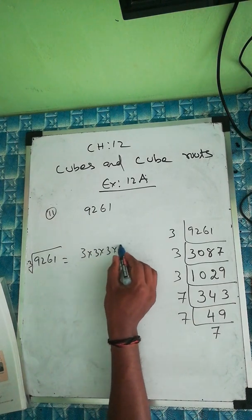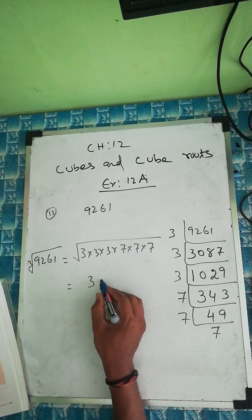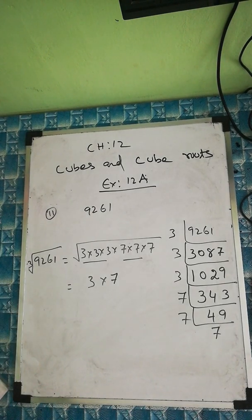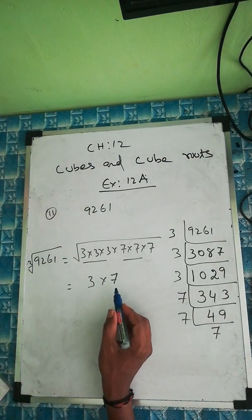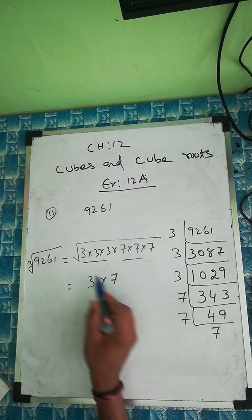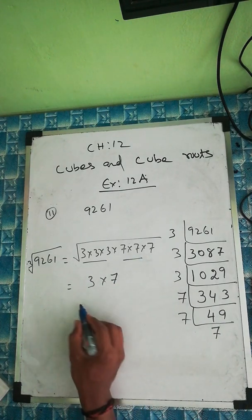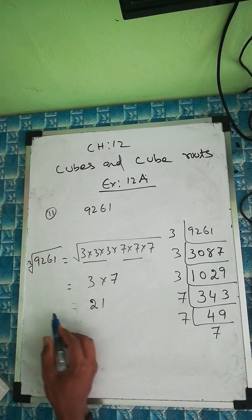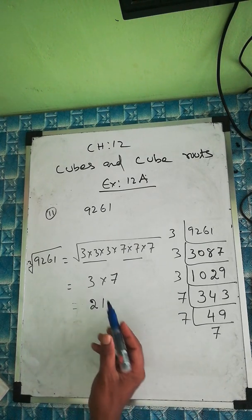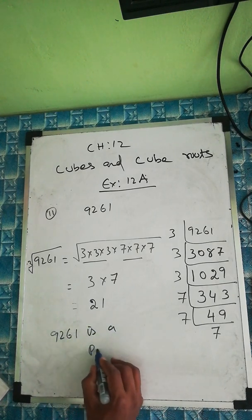So 3 into 3 into 3, and 7 into 7 into 7. We can write 3 threes as one group and 7 sevens as one group — no factor is left over. Because this group is complete and that group is also complete. So no factor is left over. So cube root of 9261 is 3 times 7, which is 21. And we can say 9261 is a perfect cube number.